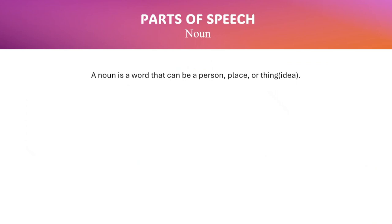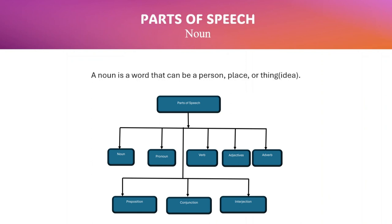In some situations, somebody can ask you: what is a noun? A noun is a word that can be a person, place, things, or idea. For example, freedom, democracy — those are part of the noun, but we need to look at what kind of noun they are.